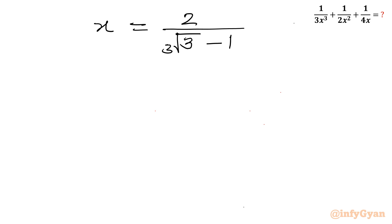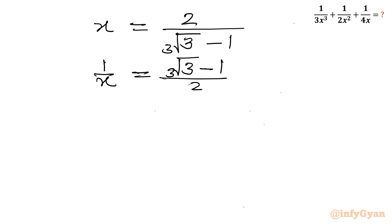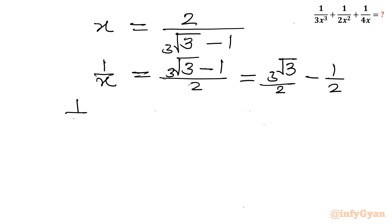Now consider the reciprocal of both sides. So 1 over x equals (cube root 3 minus 1) over 2. Now I will split the numerator: cube root 3 divided by 2, minus 1 over 2. Adding half to both sides: 1 over x plus 1 over 2 equals cube root of 3 divided by 2.